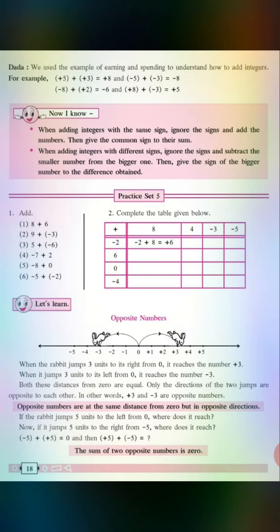Now, if it jumps 5 units to the right from minus 5, where does it reach? So we can say that negative 5 plus positive 5 equals to 0, and then positive 5 plus negative 5 will be equal to? Yes, 0. This tells us that the sum of two opposite numbers is 0.